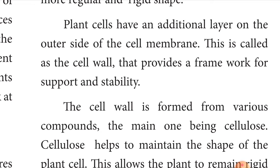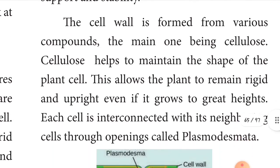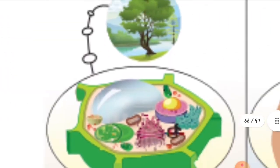Plants have an additional outer layer beyond the cell membrane called the cell wall, which provides a framework for support and stability to the plant cell. The cell wall is made up of cellulose — that is a very important one-mark question. Cellulose helps maintain the shape of the plant cell, allowing the plant to remain rigid and upright even at great heights. Each cell is interconnected with neighboring cells through openings called plasmodesmata.